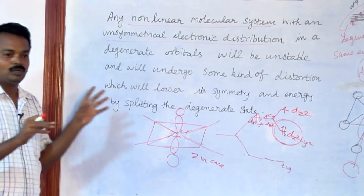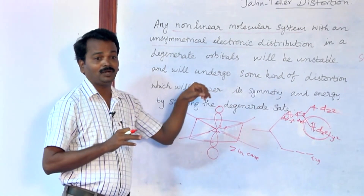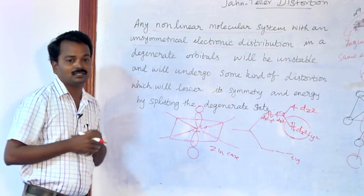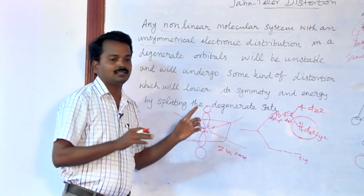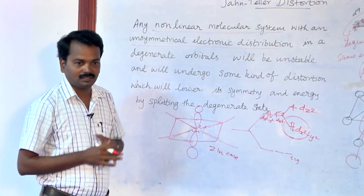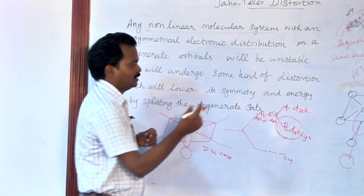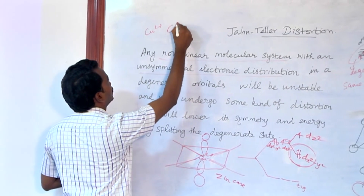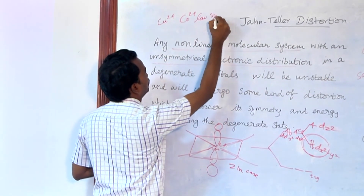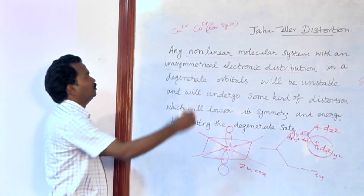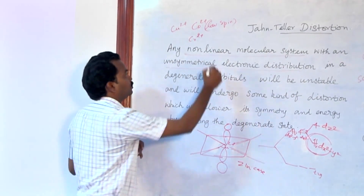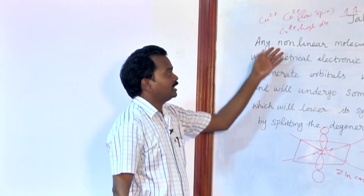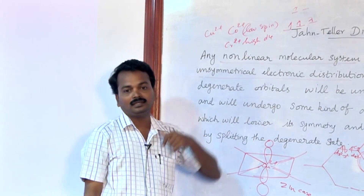One more question you can ask: can we predict which models will follow the Z-in case and which will follow the Z-out case? Theoretically it cannot be predicted. Only Z-out cases are followed in about 90% of systems. For example, low spin Co2+ and high spin chromium 2+, which is a D4 system with electrons 1, 2, 3, 4 — this high spin D4 system will follow Jahn-Teller distortion.